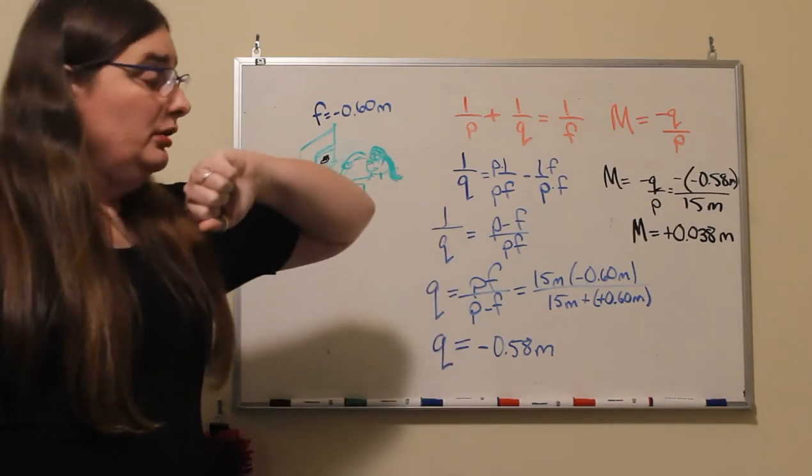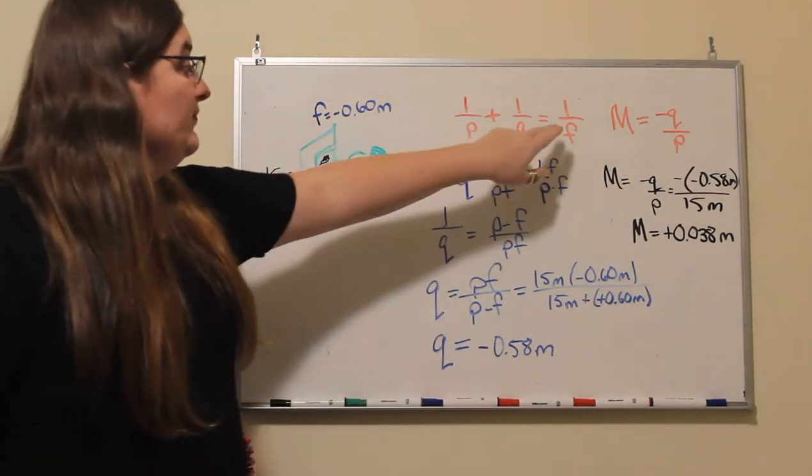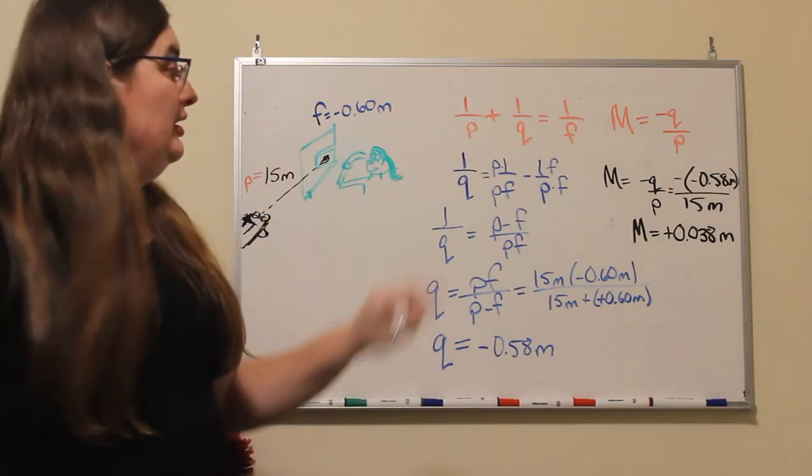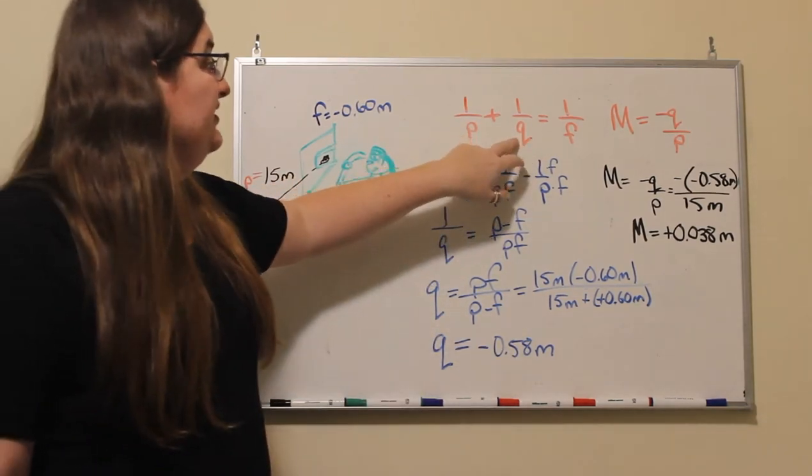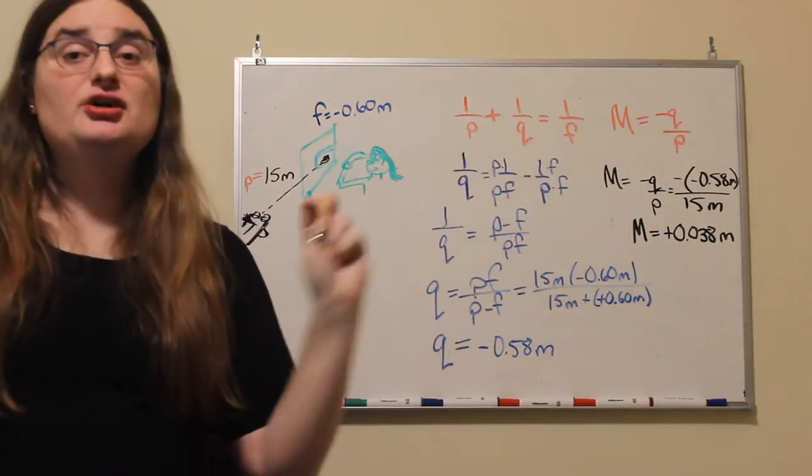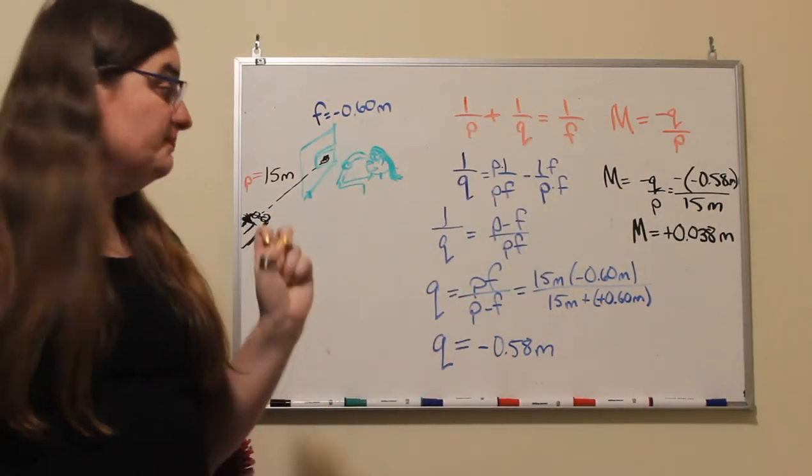We know our object distance p, we know our focal length f, we need to solve for q. So 1 over q is going to equal 1 over our focal length minus 1 over our object distance p.